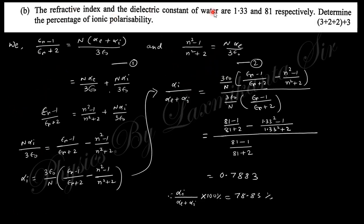Next, the refractive index and the dielectric constant of water are given as 1.33 and 81 respectively. Determine the percentage of ionic polarizability. Ionic polarizability alpha_i and electronic polarizability alpha_e are related to dielectric constant like that, and the electronic polarizability is related to refractive index like that.